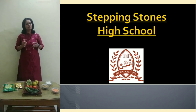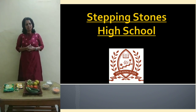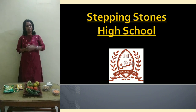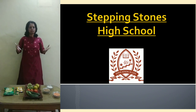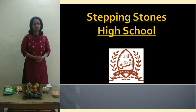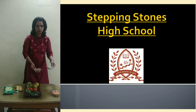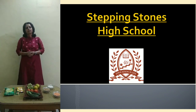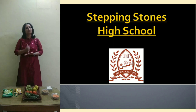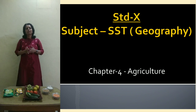By this time you must be having an idea which particular chapter we are going to cover. I will give you one more hint. In the year 1960, the Green Revolution was started to give boost to wheat and rice production of these two food crops. Yes, you must have guessed it correctly. Today we are going to start about the topic — frontography, chapter 4 — agriculture.